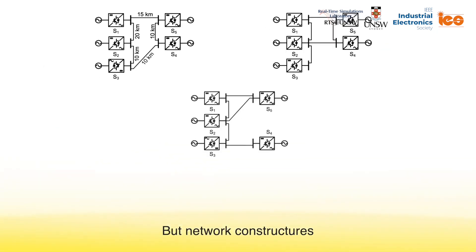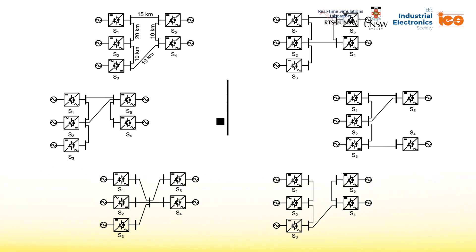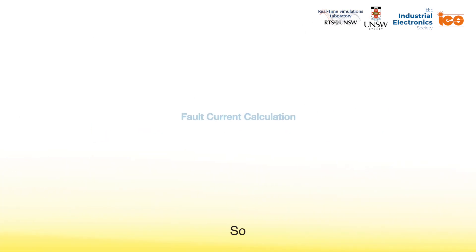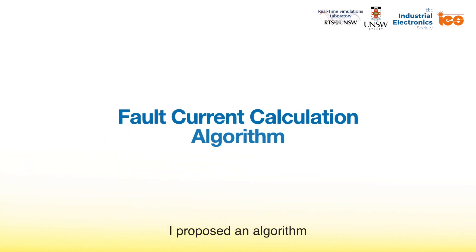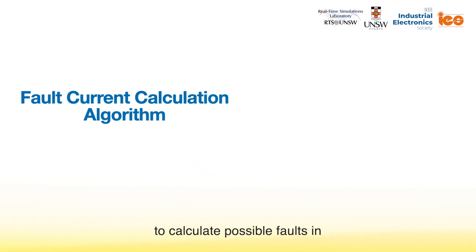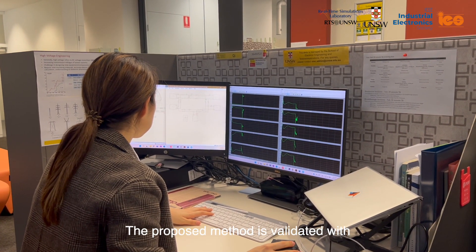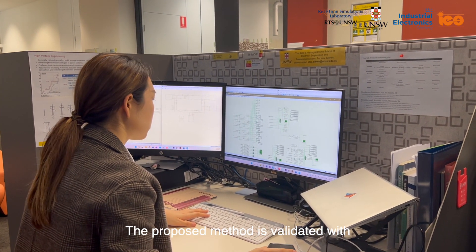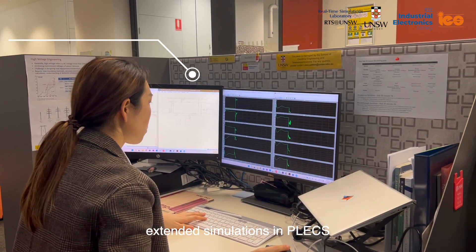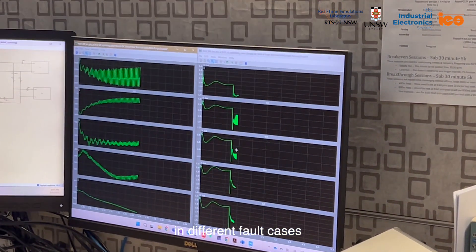But network topologies are more complicated than a simple series topology. So I proposed an algorithm based on state-space equations to calculate possible faults in different topologies with any locations in DC grids. The proposed method is validated with extensive simulations in PLEX, evaluating fault current levels in different fault cases.